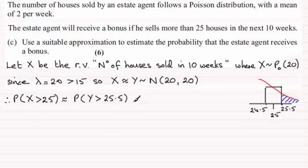So that means that we're looking for the probability of Y is greater than 25.5. That's our continuity correction. Remember, if it had been greater than or equal to 25, we would need to go into the box, and then it would have turned out to be Y is greater than 24.5. But for this one, Y is greater than 25.5.